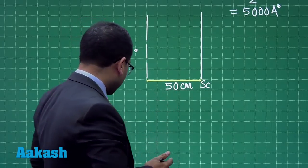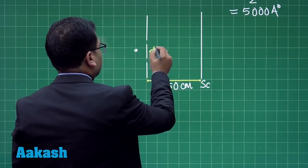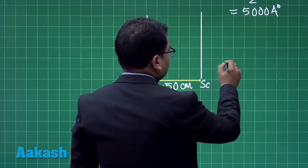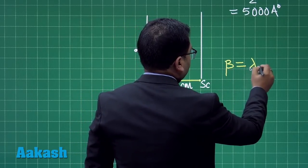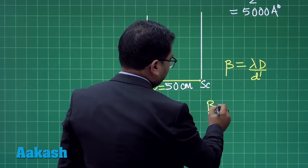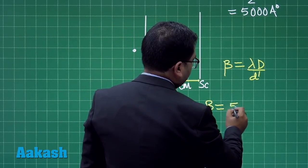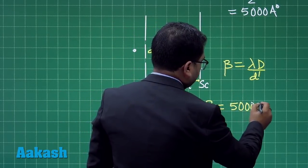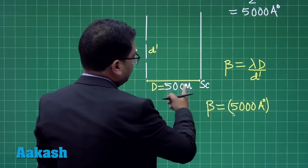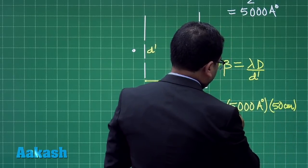Here, since d has already been reserved for the width of the slit, I will be taking the notation for this to be D'. This is the regular convention, that is capital D. The fringe width here is β = λD/D'. Now let us put the value of beta. Beta comes out to be 5000 angstrom, be careful of the unit, and capital D is 50 centimeters divided by D'.